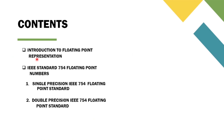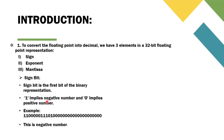Here we will be covering the introduction to floating point representation in the IEEE standard 754 for floating point numbers, which has single precision and double precision. To convert the floating point into decimal, there are three elements in a 32-bit floating point representation: the sign, exponent, and mantissa.